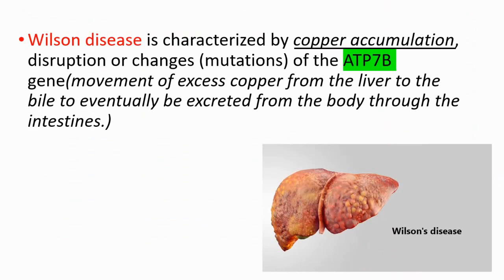Let's talk about Wilson disease briefly. It's characterized by copper accumulation. Disruption or changes of the ATP7B gene is causing this disease, and this gene is important for movement of excess copper from the liver to the bile.